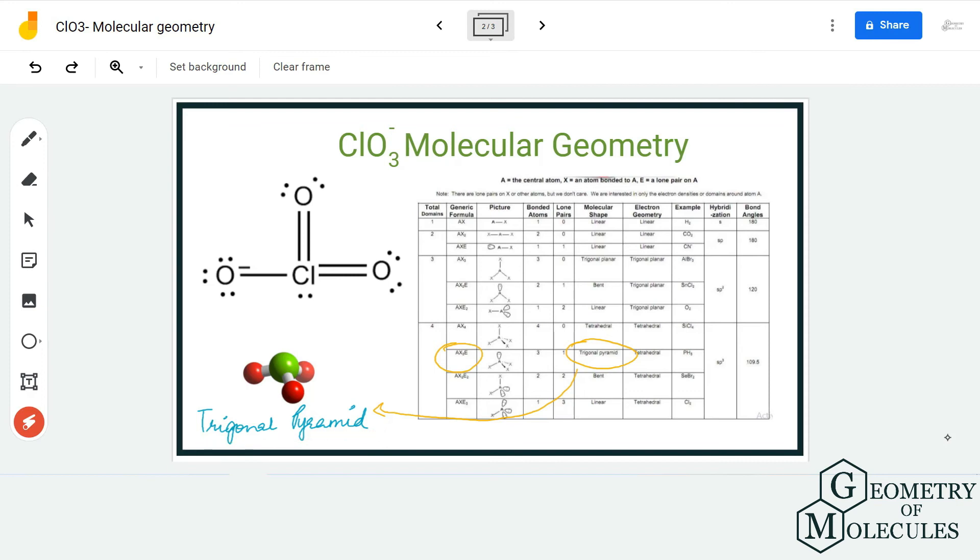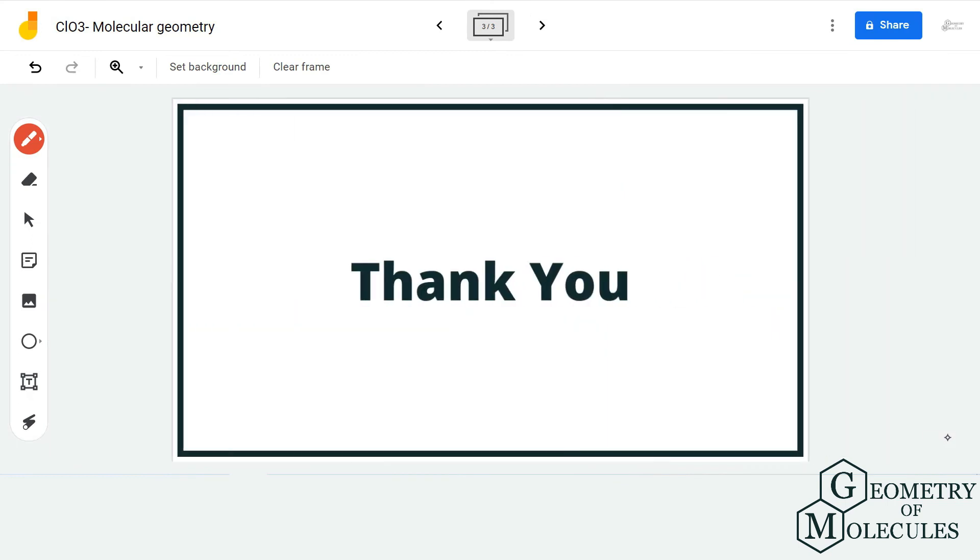The molecular geometry for chlorate ion is trigonal pyramidal. I hope this video helps you. For more videos on Lewis structure, molecular geometry, and polarity of molecules, make sure to subscribe to our channel. Thank you for watching.